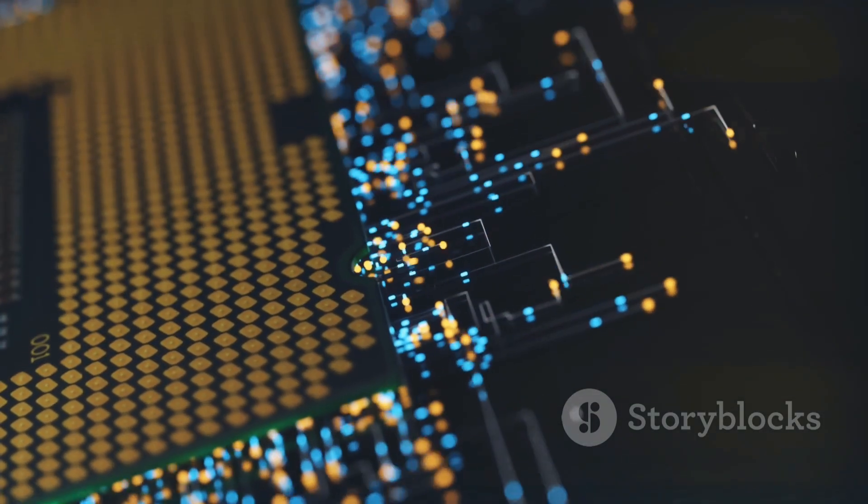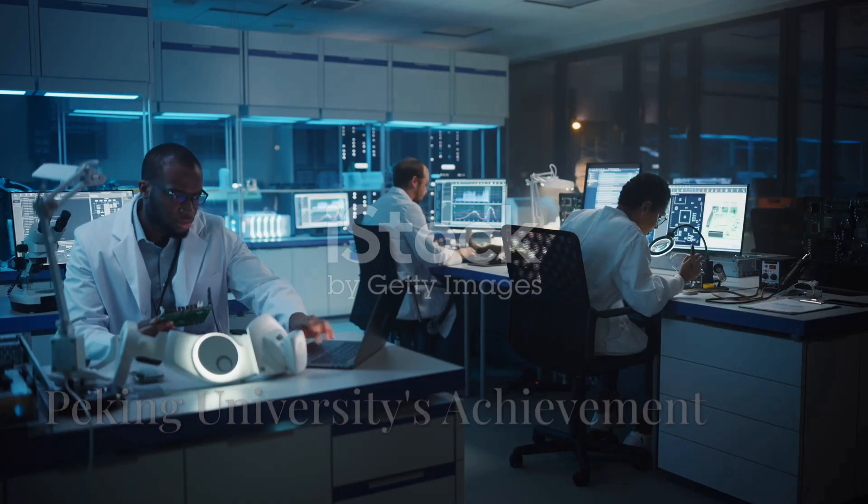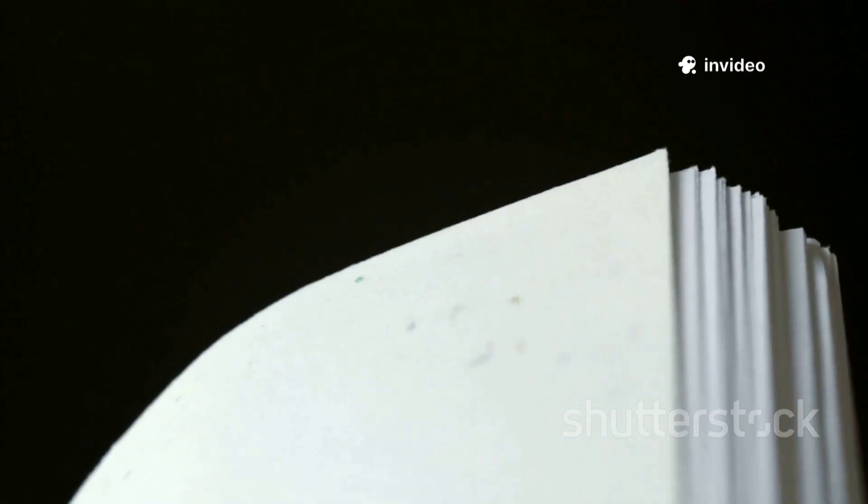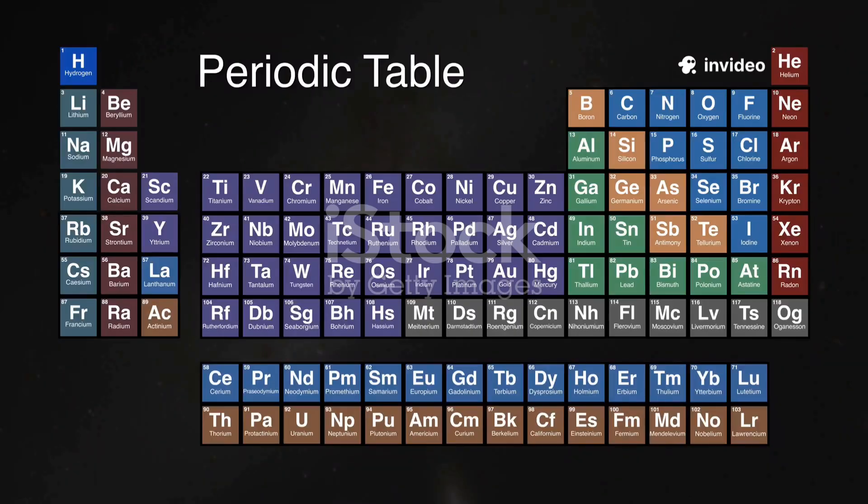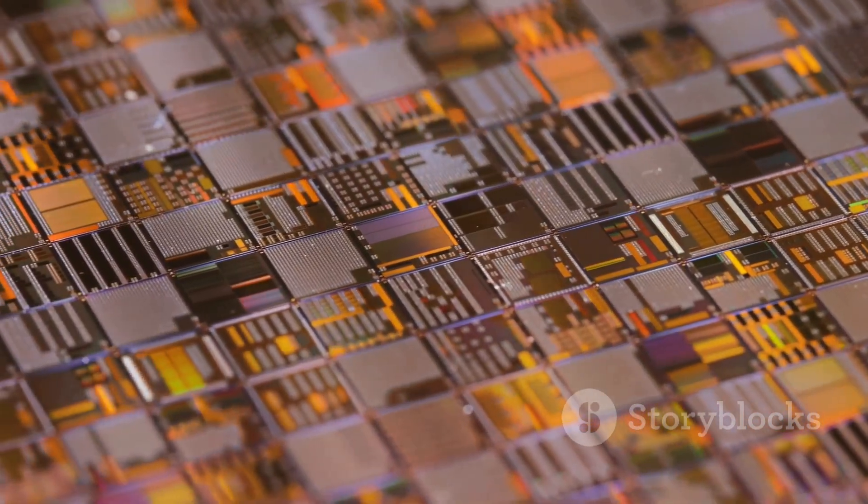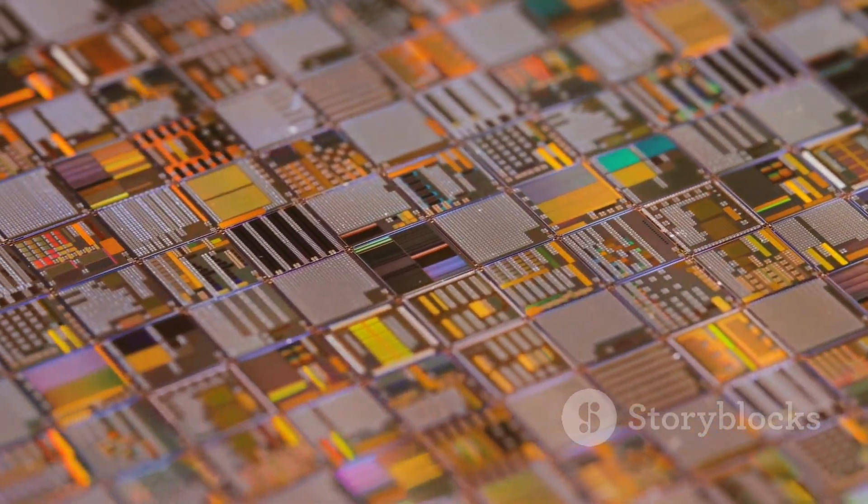This achievement actually happened in a lab at Peking University. And it was documented in a study published in the journal Nature. There, researchers took bismuth doped with Telluride and built layer by layer the first functional silicon-free chip in history.